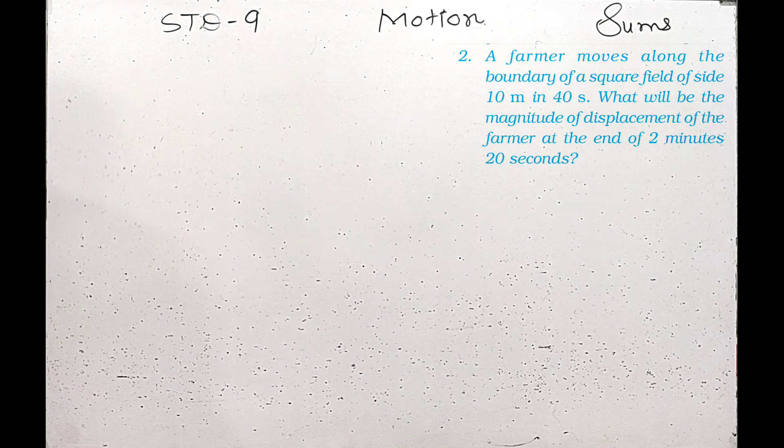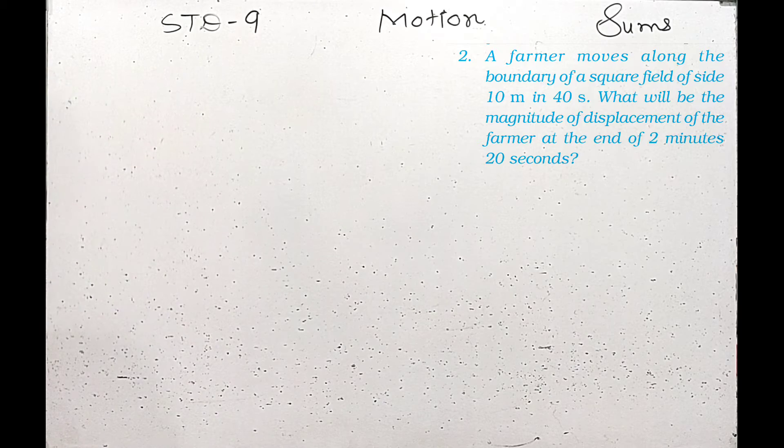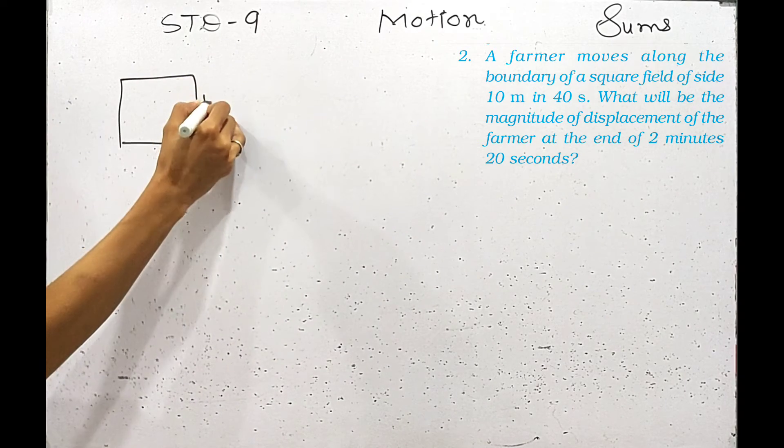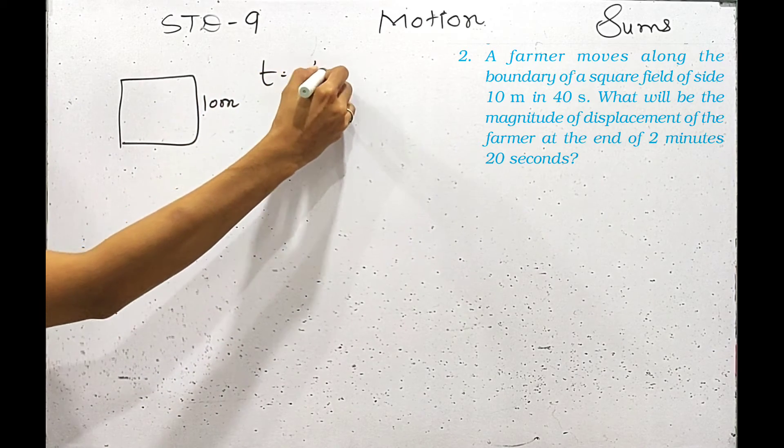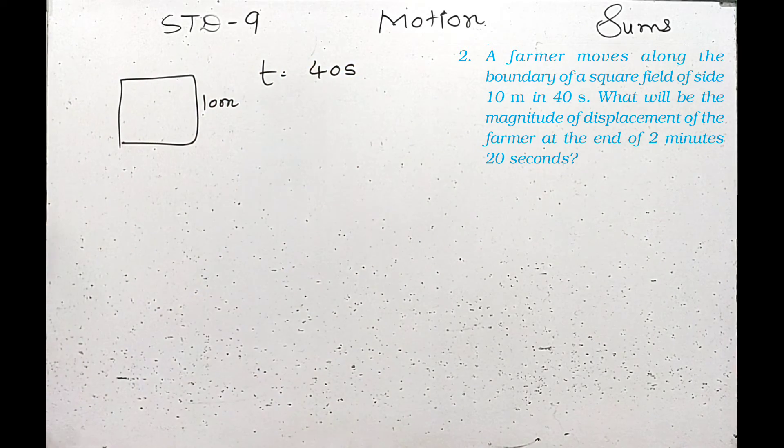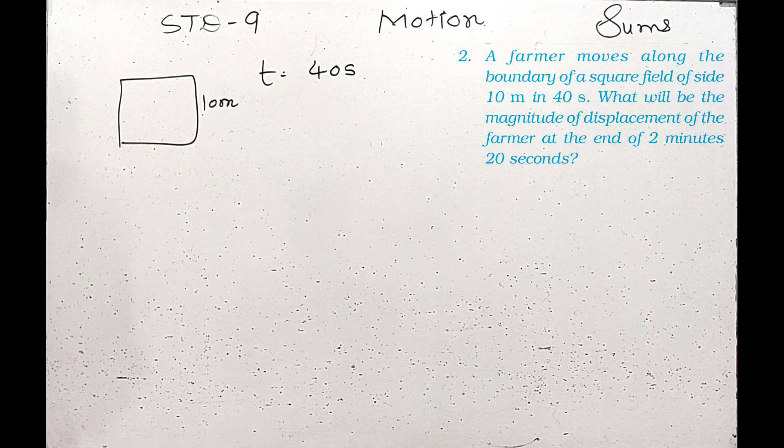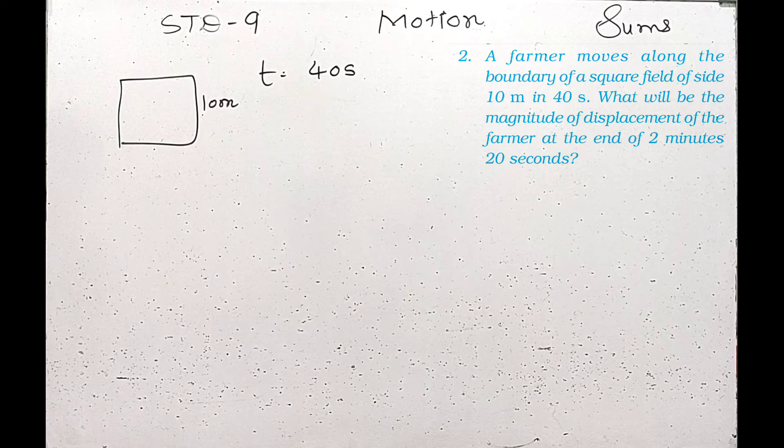The question is about a farmer who moves along the boundary of a square. The farmer is moving on the square boundary. One side is 10m and the time given is 40 seconds. What will be the magnitude of displacement of the farmer at the end of 2 minutes and 20 seconds?